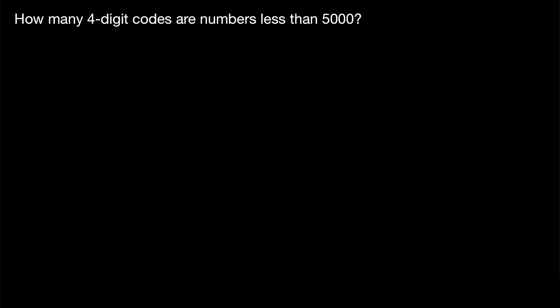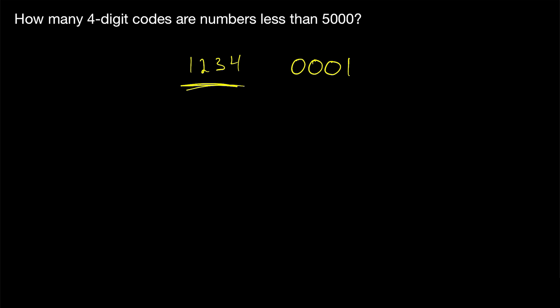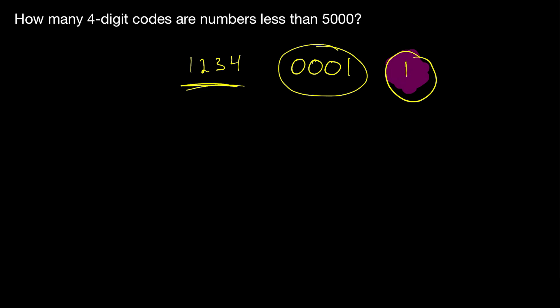In some way, that makes perfect sense. If we consider a four-digit code like 1, 2, 3, 4, that's a four-digit code that is also a number — 1,234 — which is less than 5,000. What's confusing about this question is it's not super clear if we should count something like this: a perfectly valid four-digit code, 0, 0, 0, 1. It's also a perfectly fine number — it just represents the number 1. But 1, of course, is not a four-digit number.